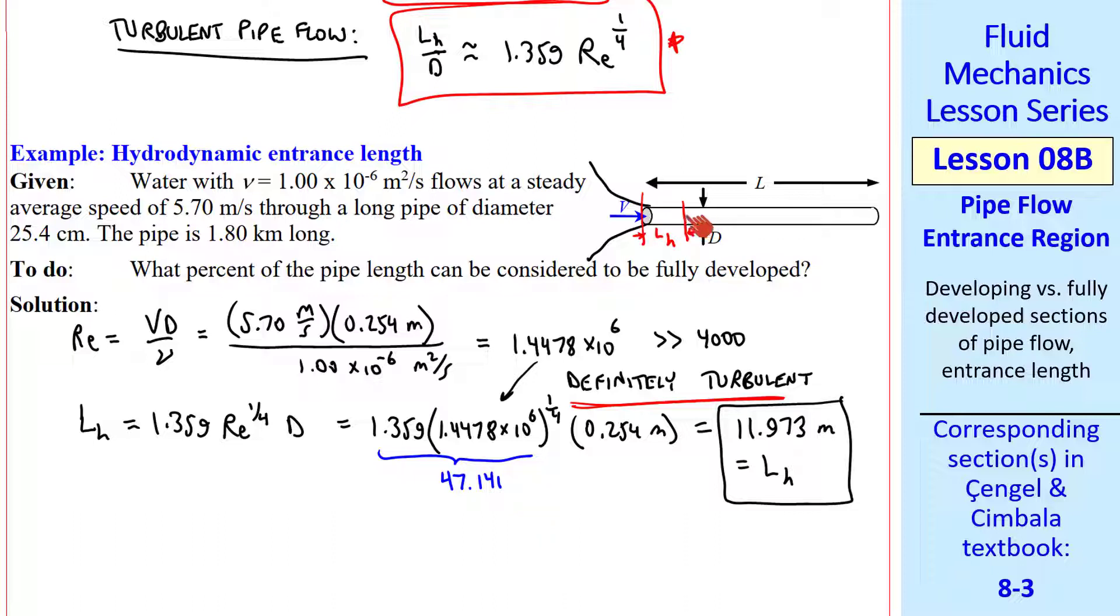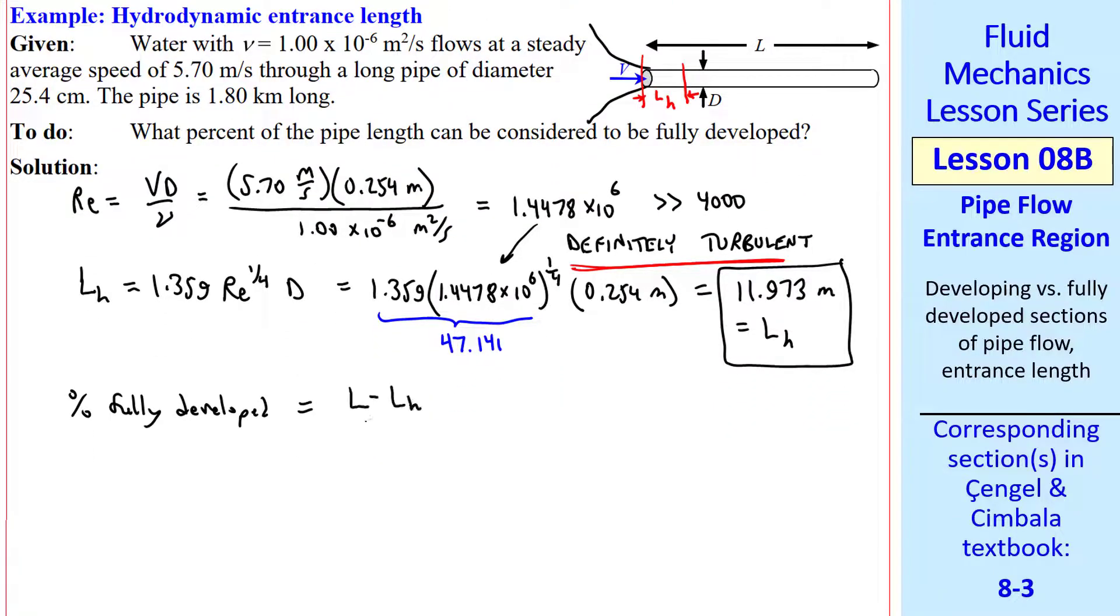That's how long it takes for this flow to become fully developed. But the actual pipe is very long, 1.8 kilometers. So the percent of the pipe length that can be considered to be fully developed is calculated as L minus L_h. That's this section of the pipe divided by L, which is the whole pipe length, times 100% since we're asked for a percentage.